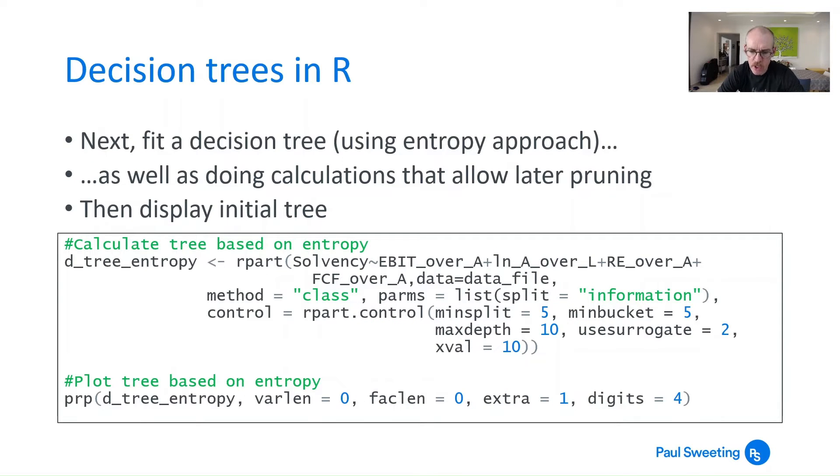Next we'll fit a decision tree using the entropy approach as well as doing the calculations which allow later pruning. So although we've got some code in here which will allow us to do the pruning, when we look at the initial tree which we'll display, this will be an unpruned tree. We're doing the calculations to create an object which has that information in it for the pruning but doesn't actually do the pruning.